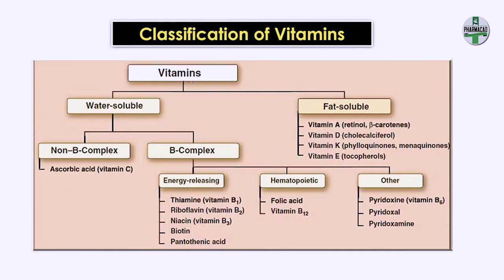Vitamins are broadly classified based on their solubility — water soluble and fat soluble. In fat soluble we have vitamins A, D, E, and K. While in water soluble there is vitamin B and vitamin C. In vitamin B there are further classifications; together they are called B complex, and vitamin C is called the non-B complex.